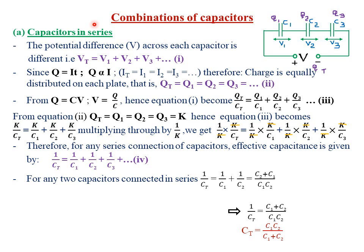Today we are looking at combination of capacitors. Just like for resistors, we have two ways in which we can combine capacitors. One is what we call the series connection of capacitors. Two, we have what we call the parallel connection of capacitors. So let's start by looking at the series connection of capacitors.